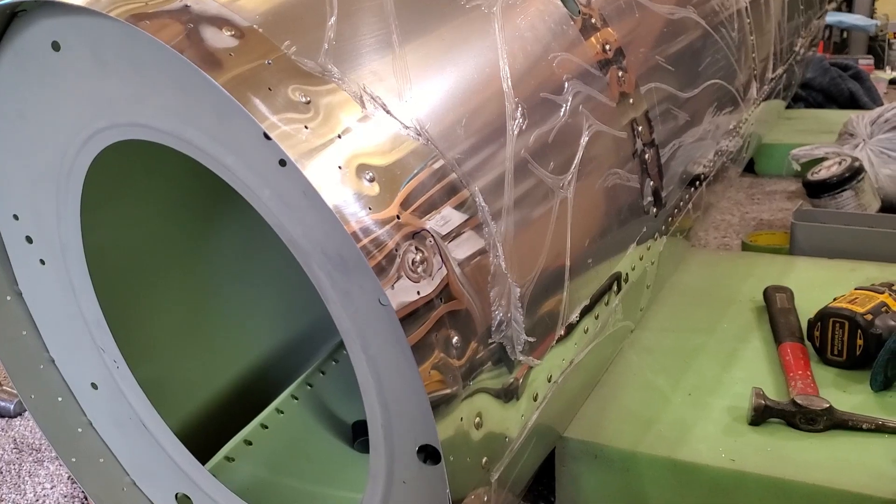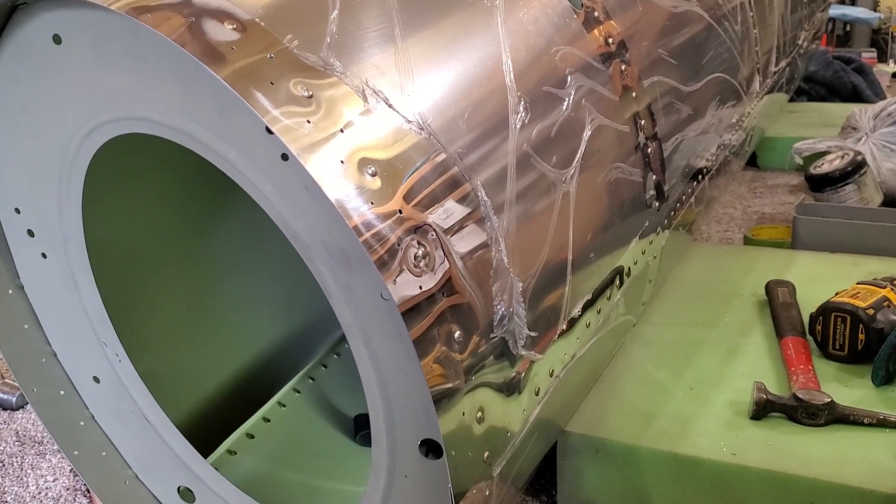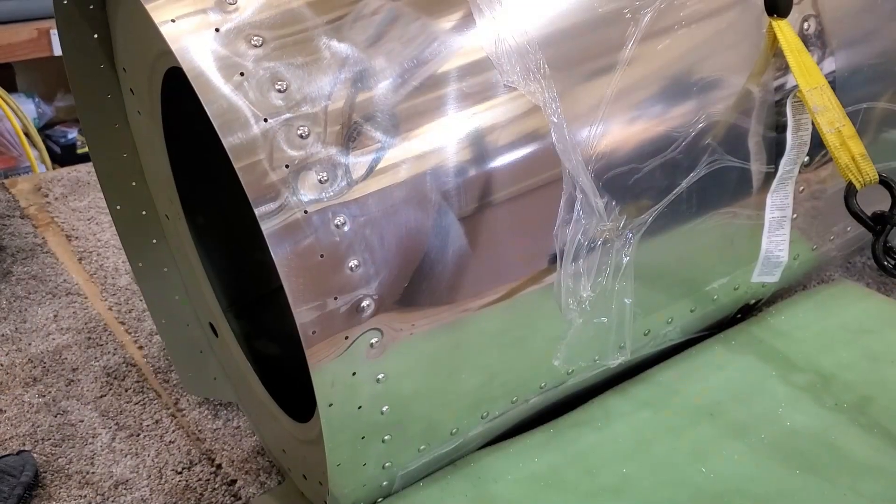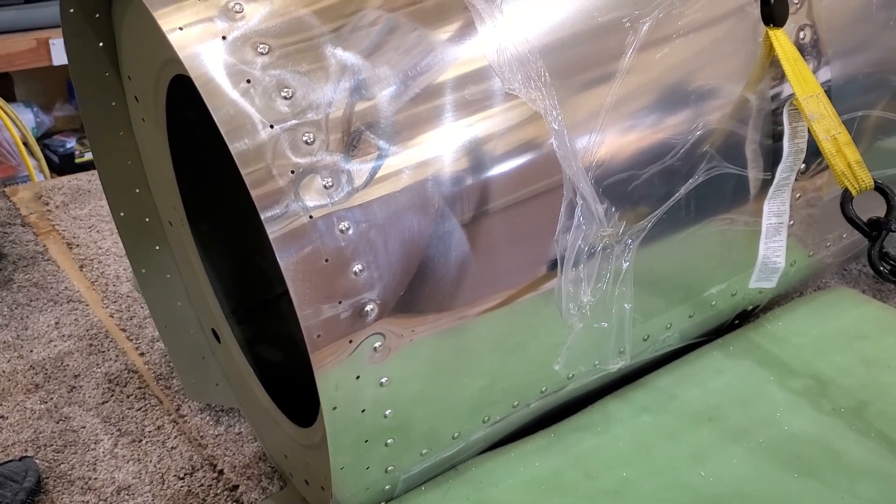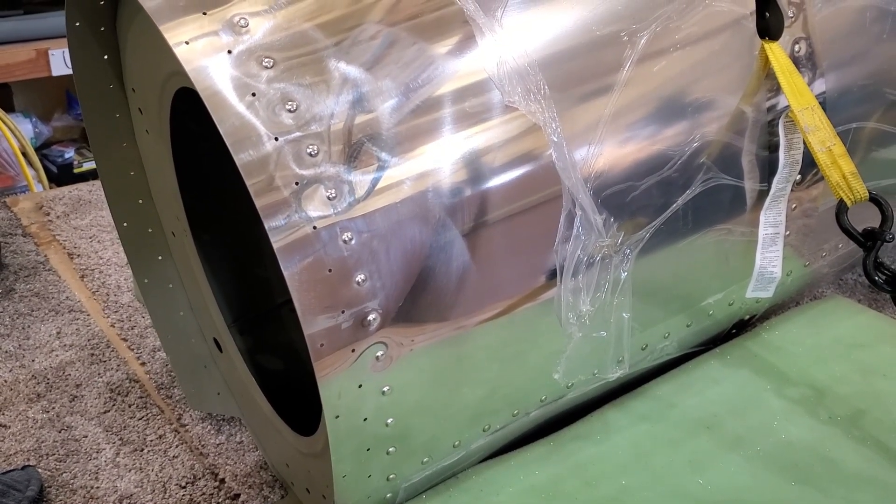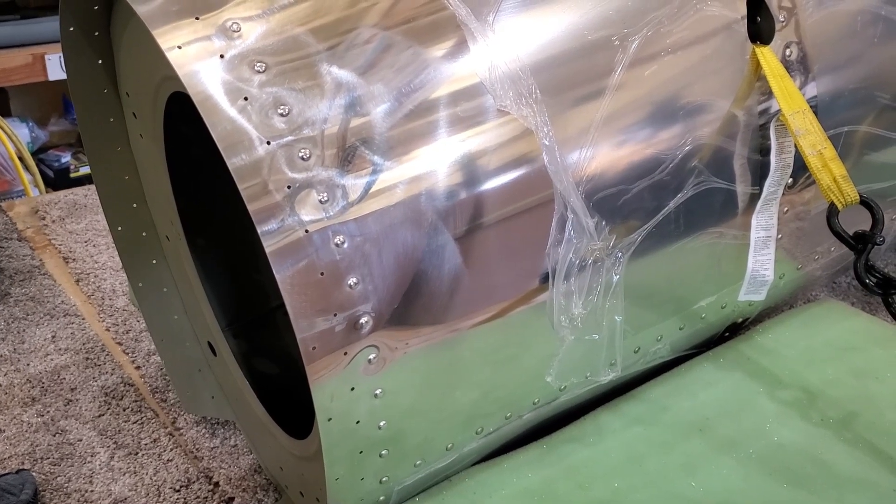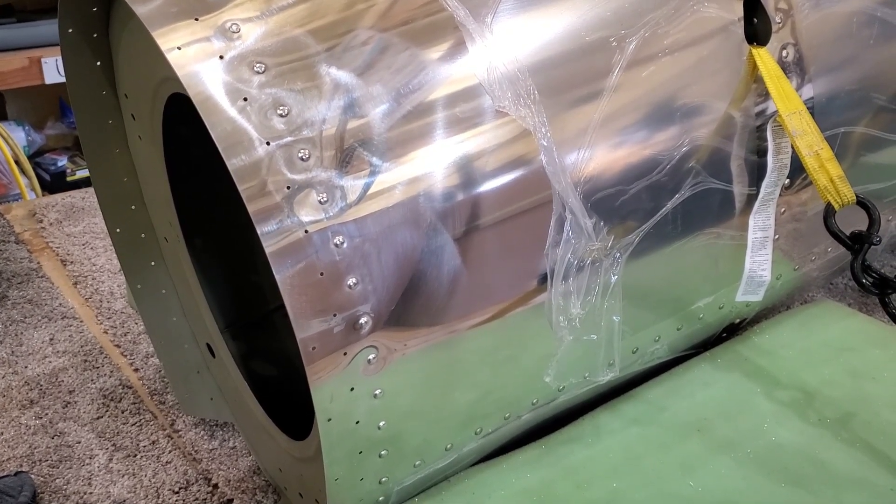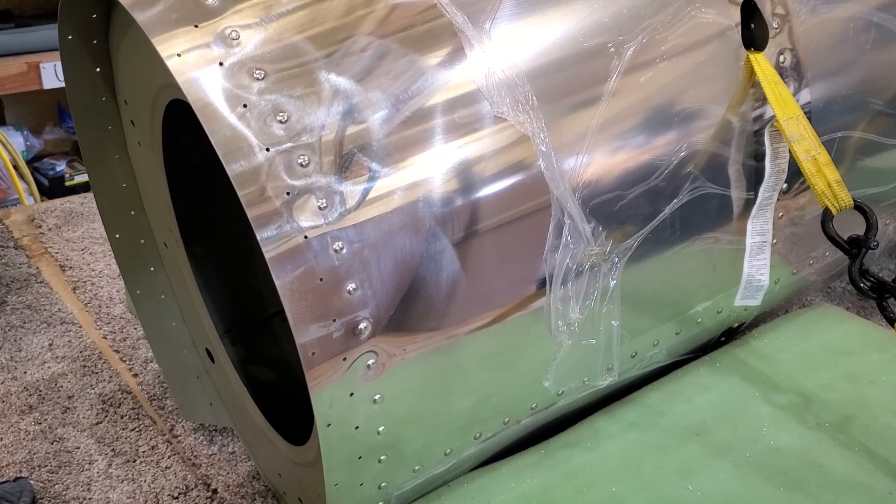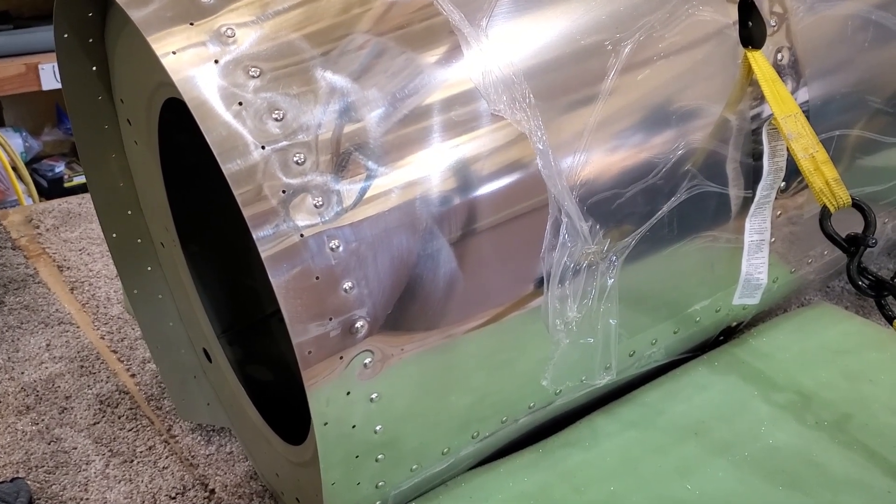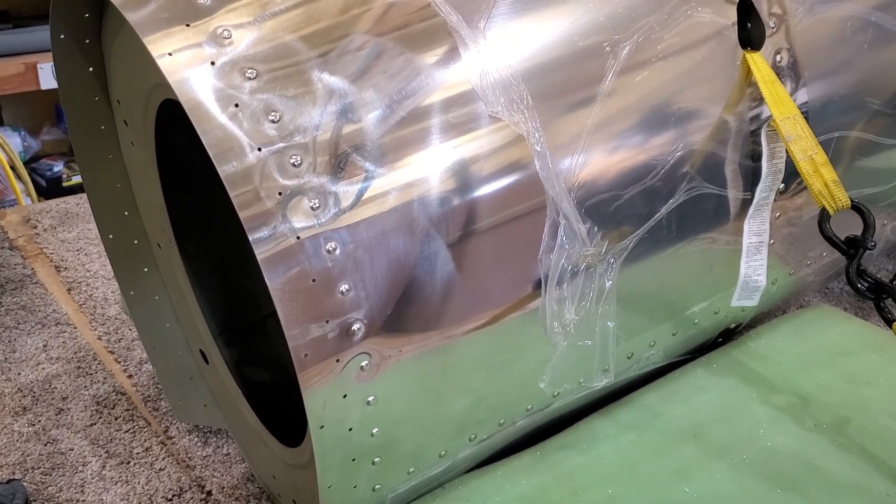Mission accomplished. Somewhere in this line of rivets is the rivet that we just repaired. As you can see, it's very difficult to tell which one it is. The moral of the story here is to not panic when you ding, dent, or scratch your airplane. We have ways to fix all these different things, and you can give us a call if you have any concerns.